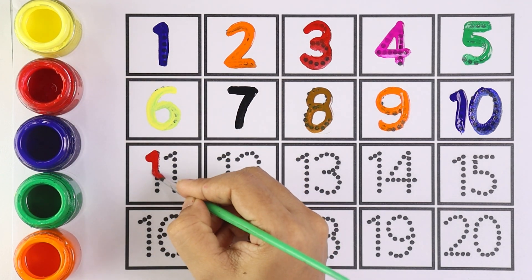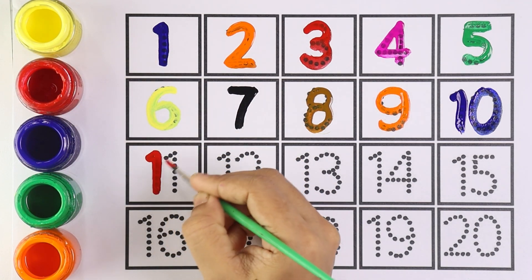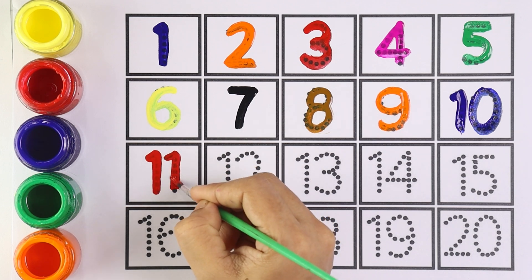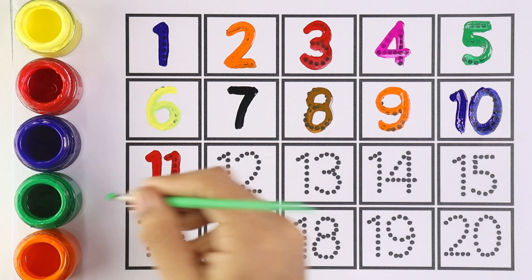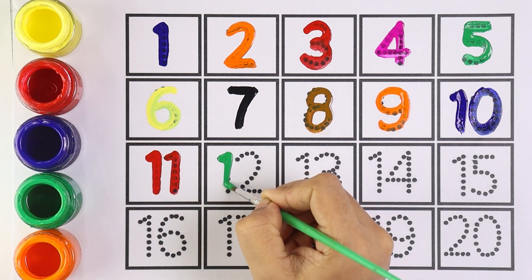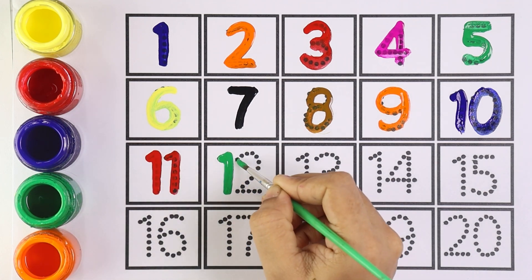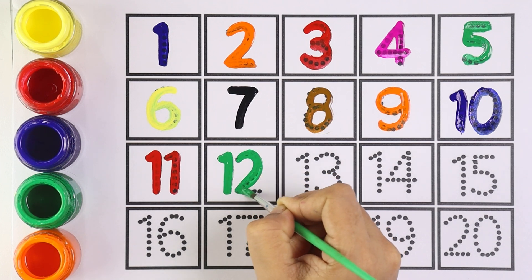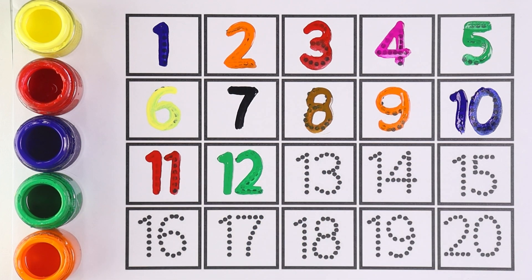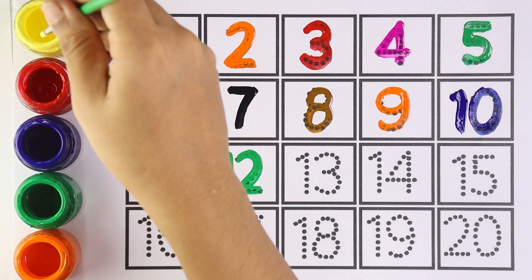Red color for number eleven. Number eleven. Green color for number twelve. One and two makes the number twelve. Number twelve.